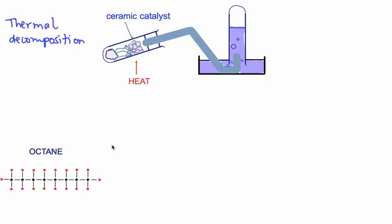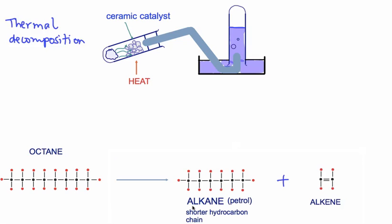Carrying out this process, it gets broken into an alkane - the kind you might find in a petrol mixture, a shorter chain hydrocarbon more useful as a fuel - and also a substance called an alkene, which is a much shorter chain hydrocarbon.